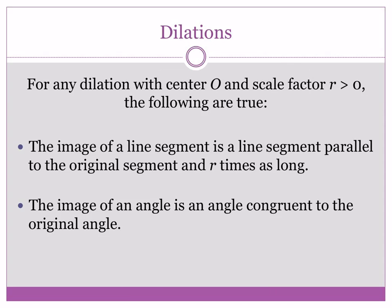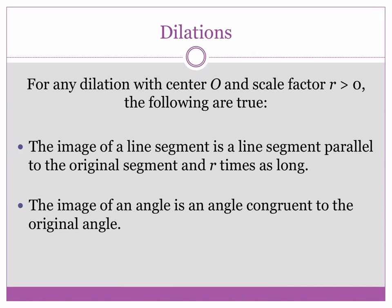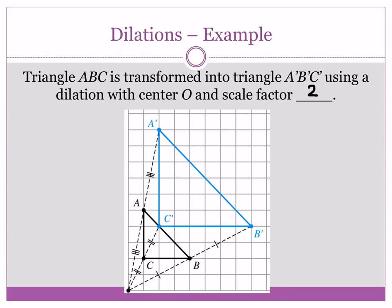For any dilation with center O and scale factor R greater than zero, the following are true: the image of a line segment is a line segment parallel to the original segment and R times as long. The segment CB is parallel to segment C prime B prime, and we could do that with all sides of the triangle. The image of an angle is congruent to the original angle — so angle C at the bottom is 90 degrees in the pre-image, and angle C prime is 90 degrees in the image as well. It preserved those angles and doubled the sides.